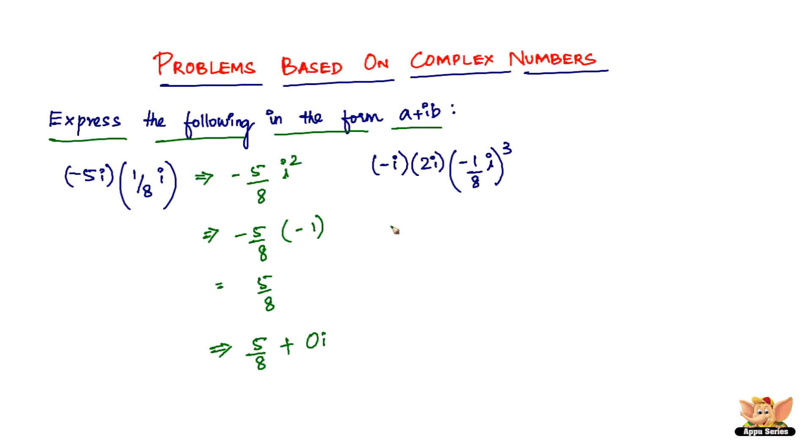We have minus i times 2i which is nothing but minus 2i squared, and then we have minus 1 by 8i the whole cube, which is negative divided by i cubed.